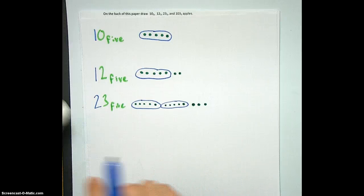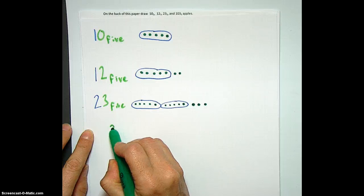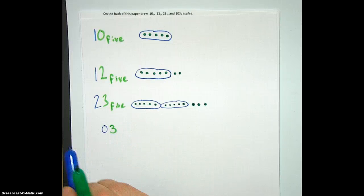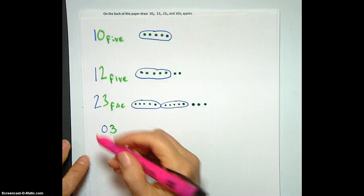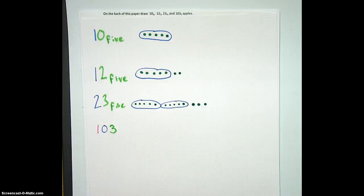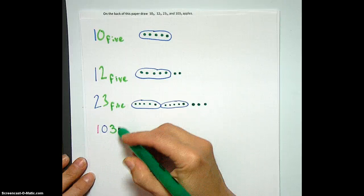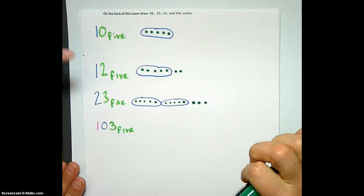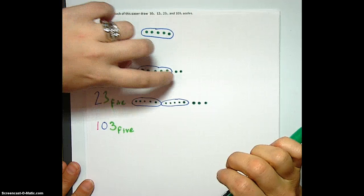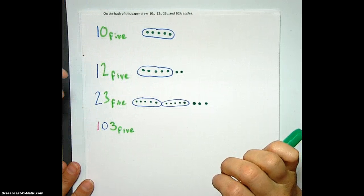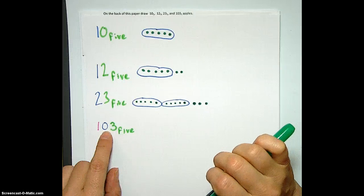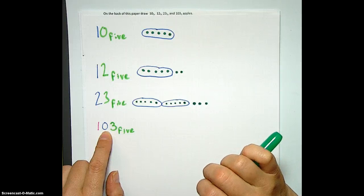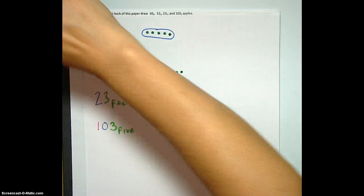So that means that we have 3 single apples, 0 groups of 5 apples that aren't accounted for, and 1 group of 25 apples. You know, Karen, I think that this one is really tricky because before, when I was looking at the 1s, I was able to tell just how many little apples I needed to draw. But here, when you look at the 1s, it's a 0, so you feel like you shouldn't draw any at all. Well, that's the 5s.